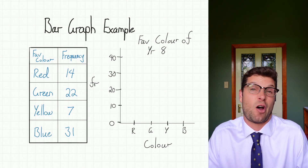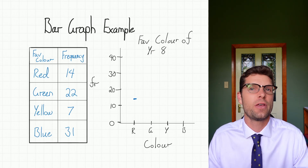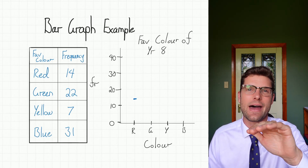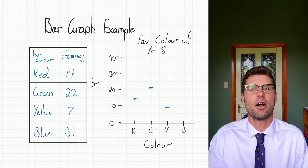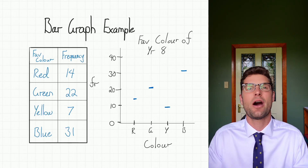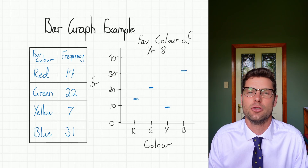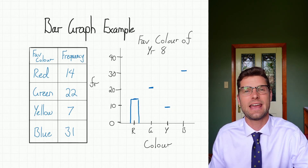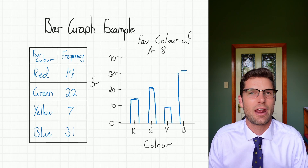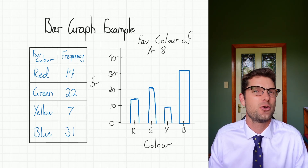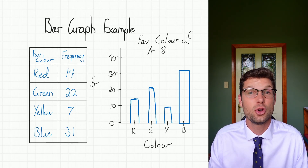The way I do my bar graphs — and I would recommend this — is at each frequency number, put a horizontal line with your ruler. For red at 14, put a horizontal line there. Then 22 on green, horizontal line. 7 on yellow, horizontal line. 31 on blue, horizontal line. This means my bars won't be knocking into each other as I do them and it lets me see what they should look like. From here, you just have to go up, across, and down using a ruler. As long as you've got those bars standing right up to the correct number looking neat, you'll get the mark.